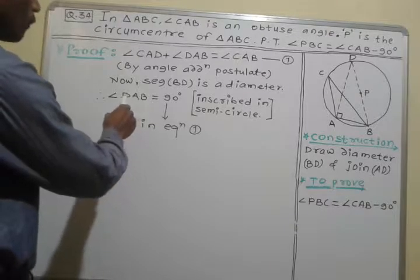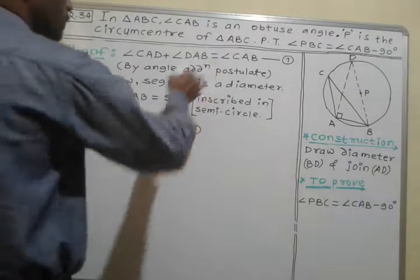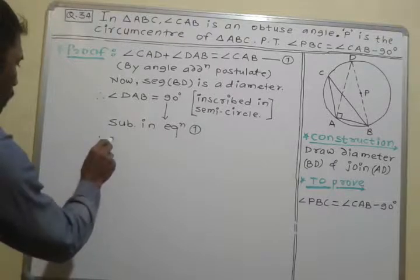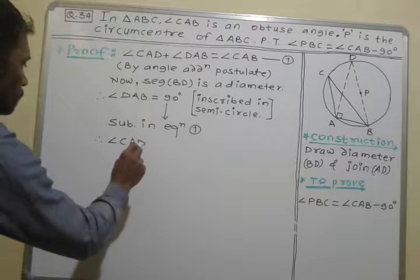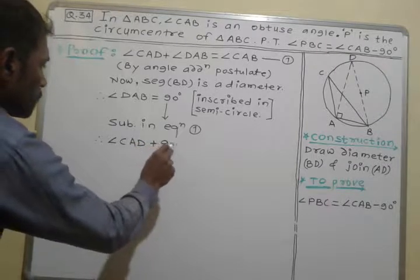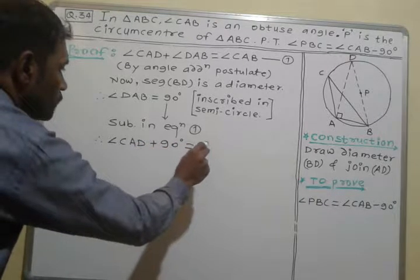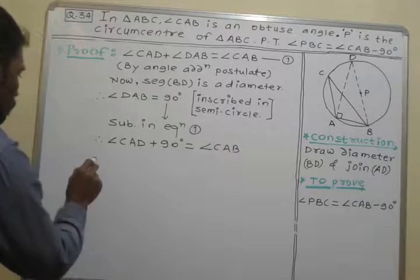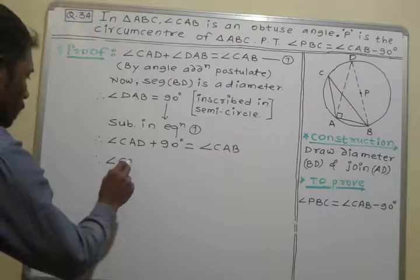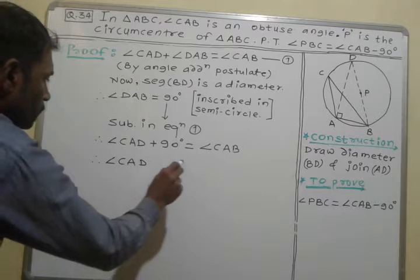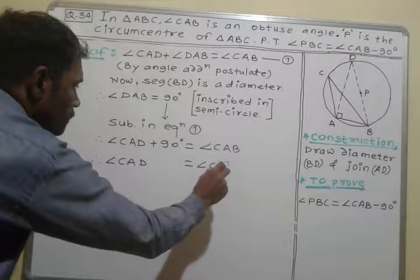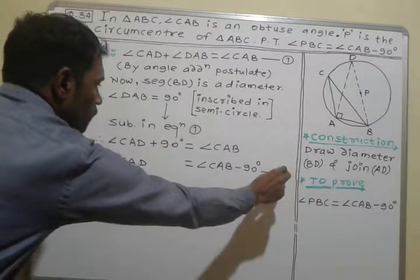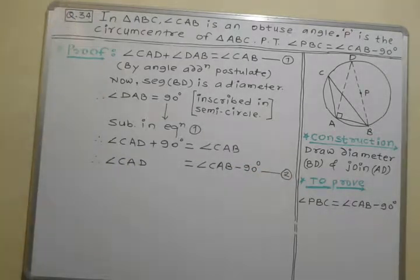This value of angle DAB equals 90 degrees. I will substitute in equation 1. Therefore, we have angle CAD plus 90 degrees equals angle CAB. Therefore, angle CAD equals angle CAB minus 90 degrees. This is equation 2.